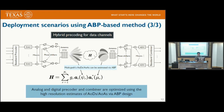The second application scenario is hybrid precoding for data channel communications, which relies on accurate estimates of the channel's angle information. Our proposed approach provides high-resolution angle estimates so that baseband precoding, analog precoding, baseband combining, and analog combining can all be further optimized based on accurate channel directional information.